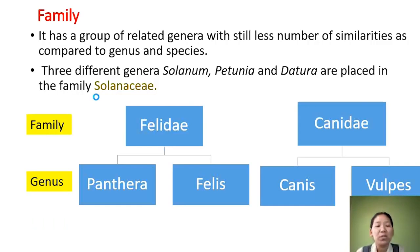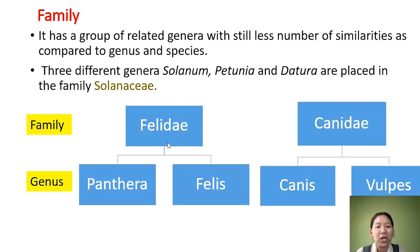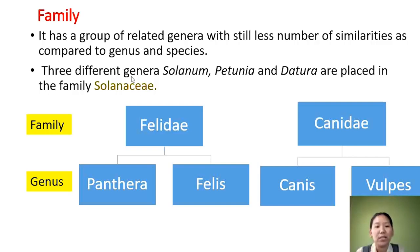Family consists of a group of related genera. Genera with similar properties are kept under the same family even though they have fewer similarities than at the genus or species level. For example, the family Felidae includes related genera like Panthera and Felis; Canidae includes dogs and fox, which are different genera. In plants, Solanum, Petunia, and Datura are three different genera but come together under the same family.